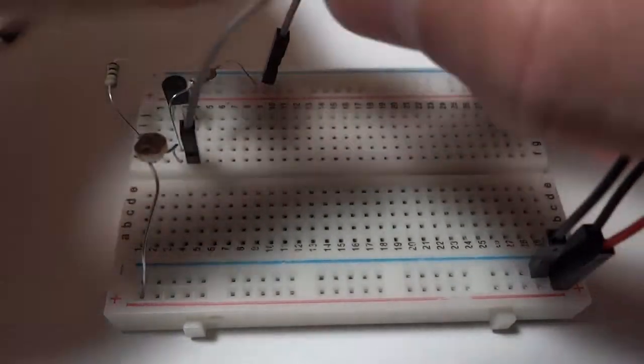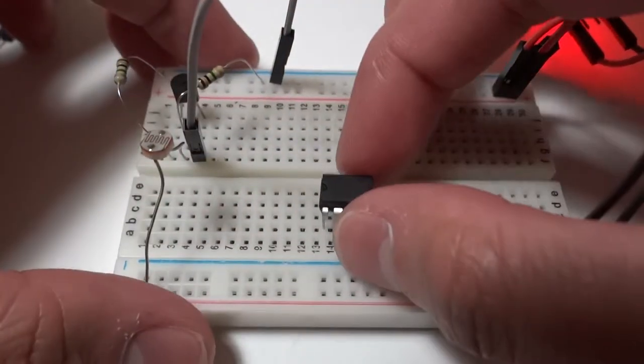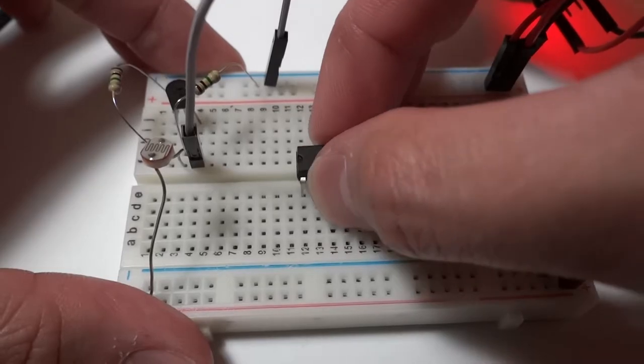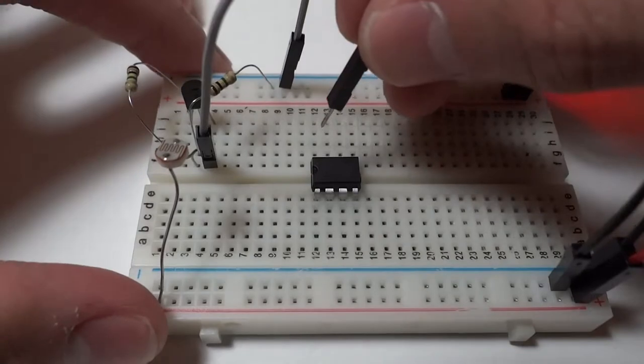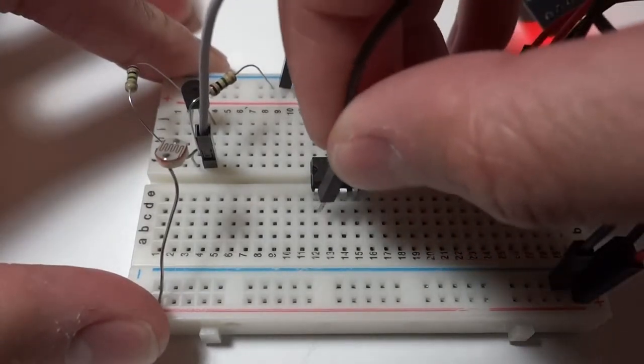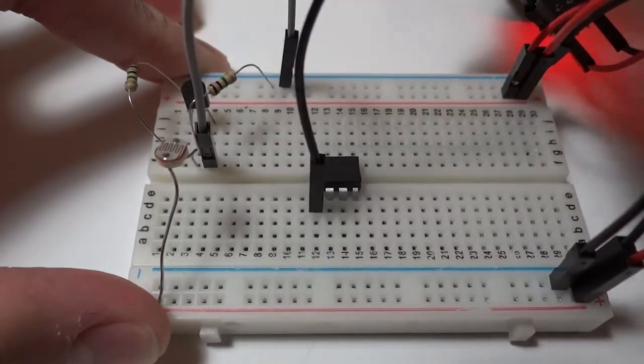Take the 555 timer and place it on the breadboard. First, connect the power to the 555 timer by connecting 5 volt to pin 8 and ground to pin 1.